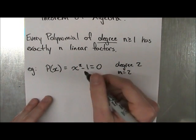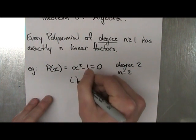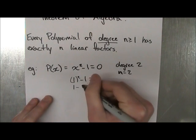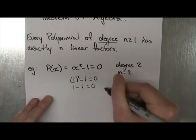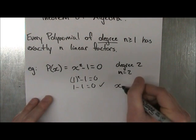So if we plug in 1, we can see that 1 squared minus 1 is equal to 0. So we get 1 minus 1 is equal to 0. So this is true. So that must be a factor. Well, x is equal to 1.